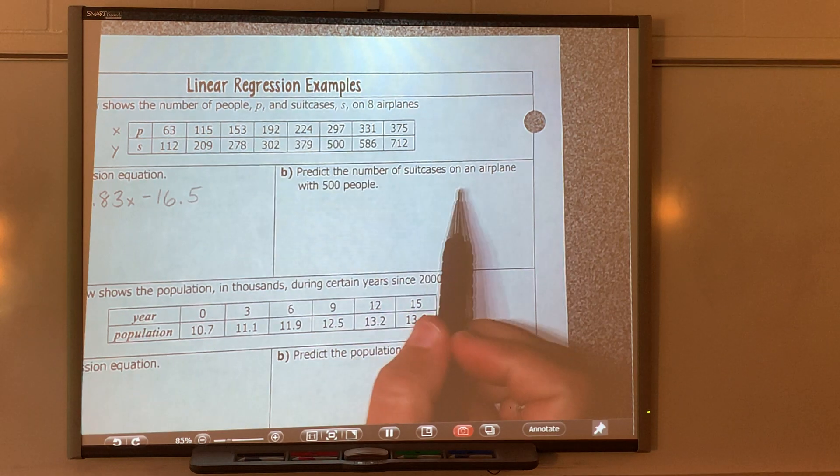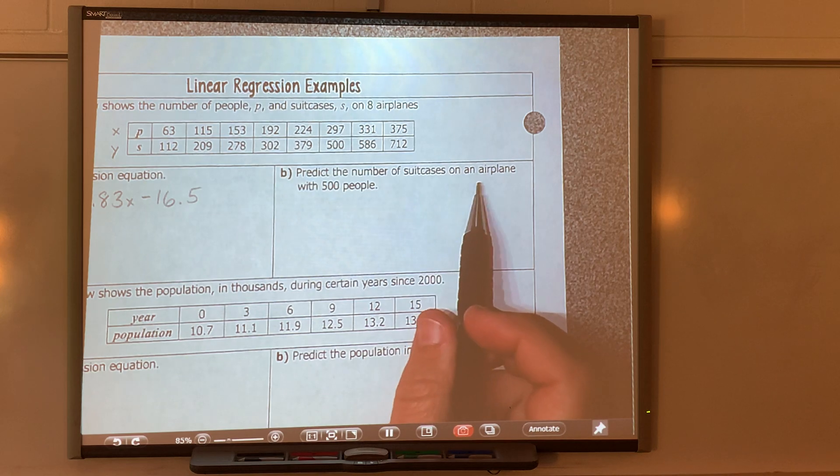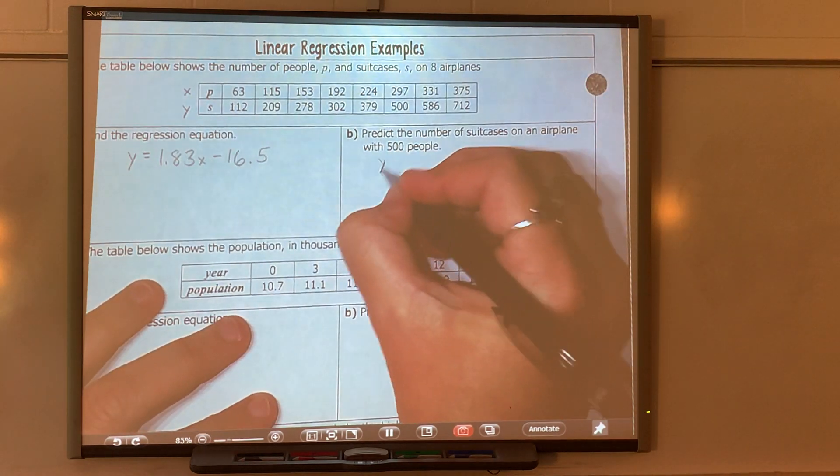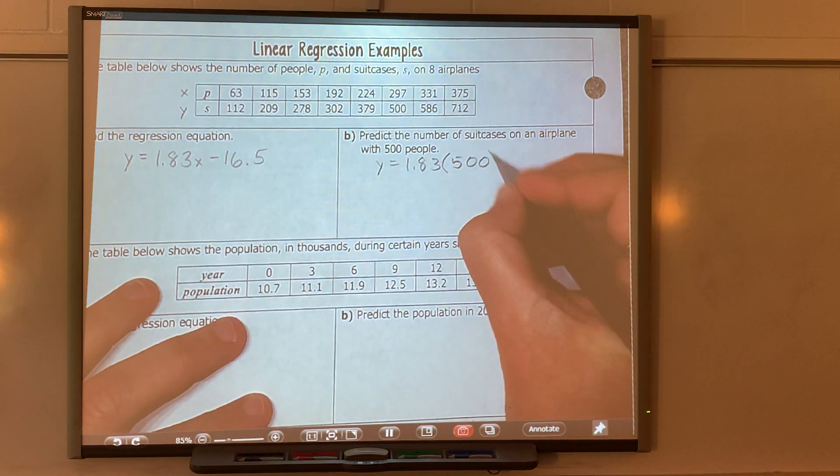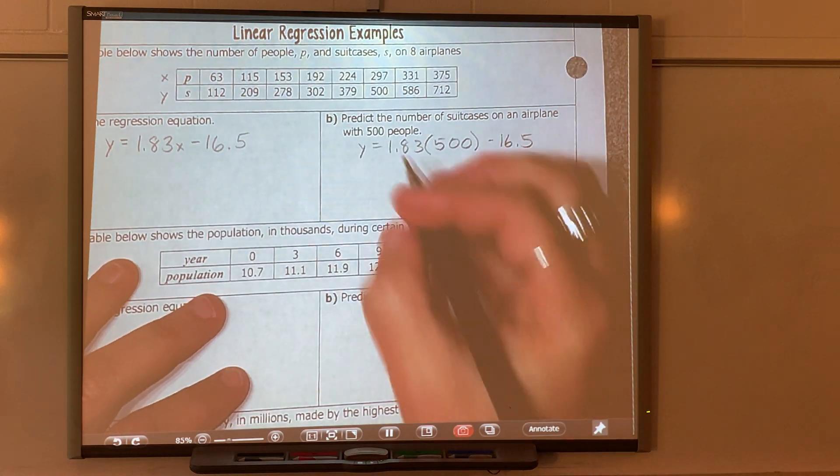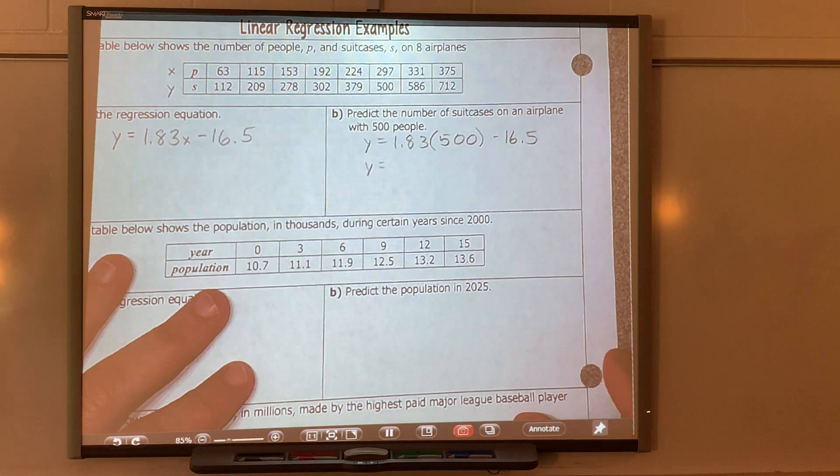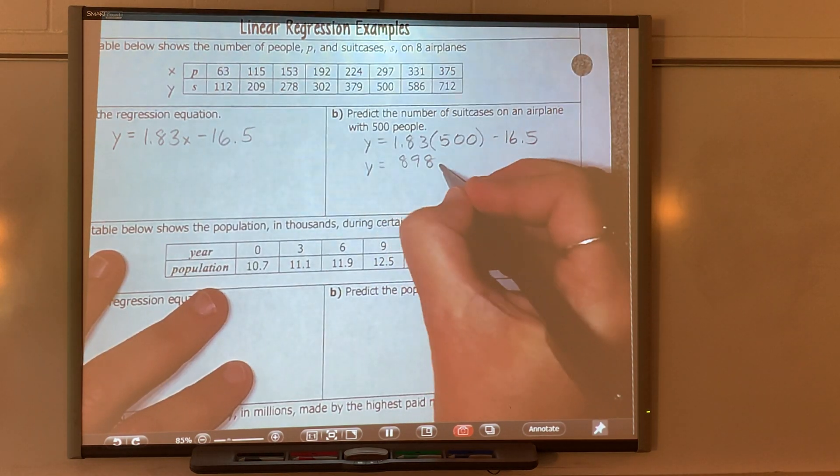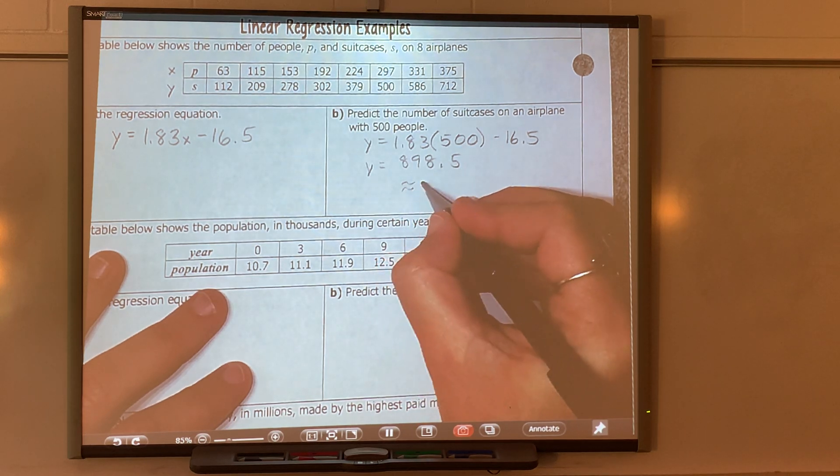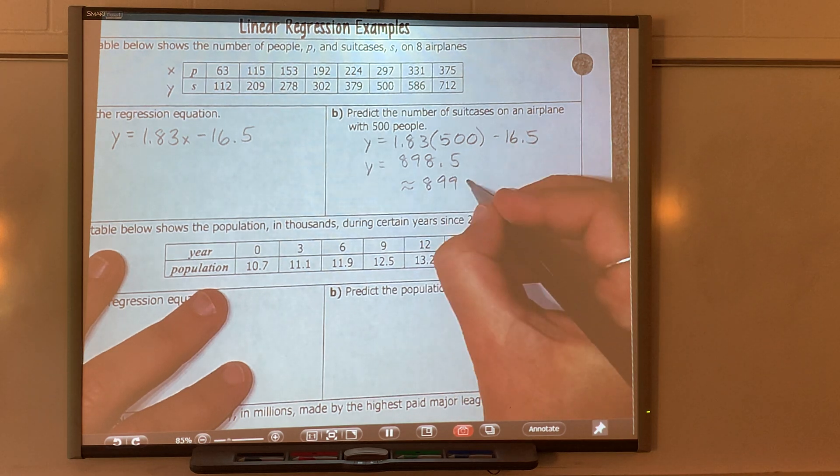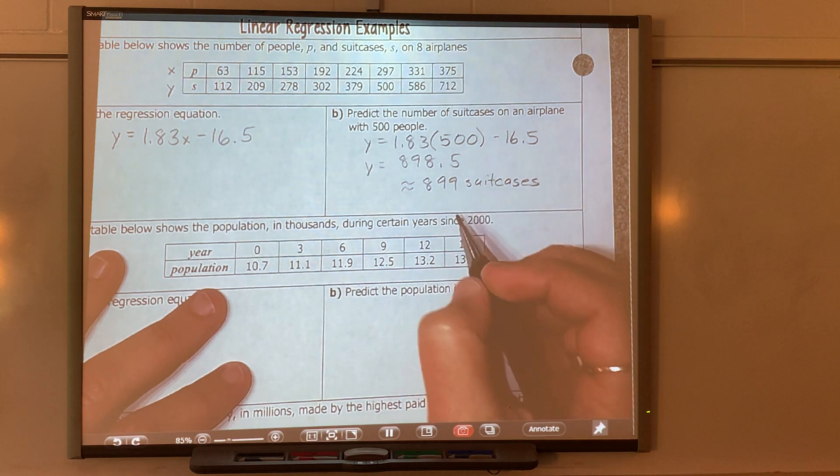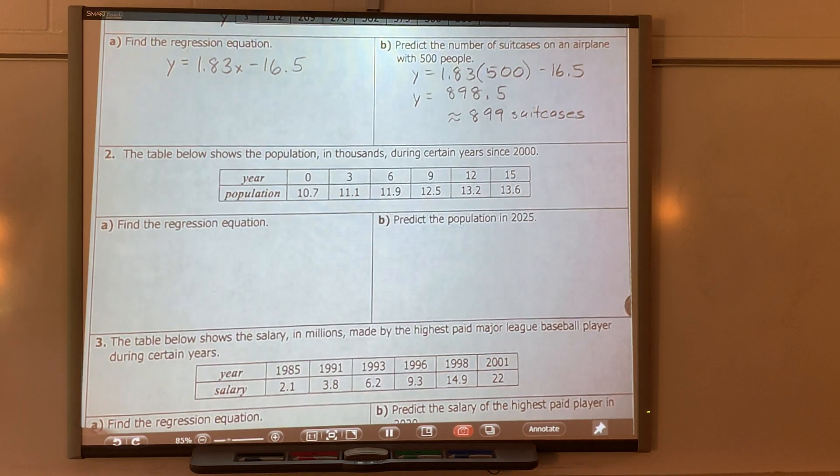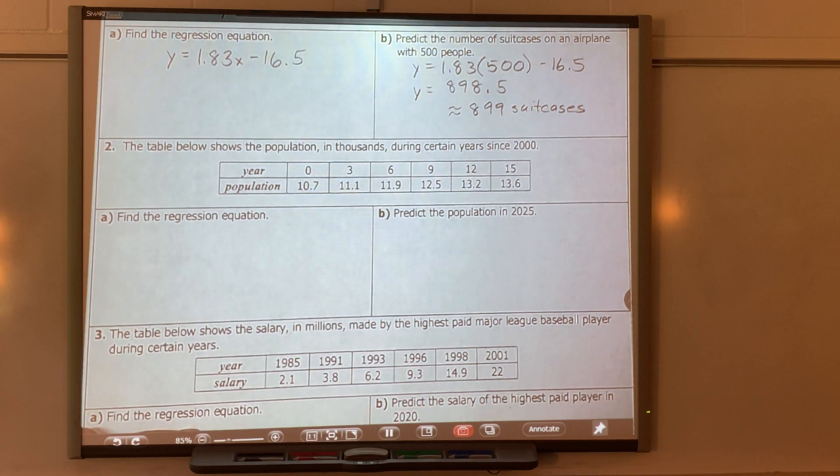We're going to round in the hundredths place. You should have gotten 1.83x minus 16.49, which rounds to 16.5. So that's your equation. You're going to do this every time. Then hit second mode and that'll take you back to your regular screen. It says predict the number of suitcases on an airplane with 500 people. Where am I putting in 500? In for X. Y equals 1.83 times 500 minus 16.5. You get 898.5, so we're going to say about 899 suitcases. That's your answer.